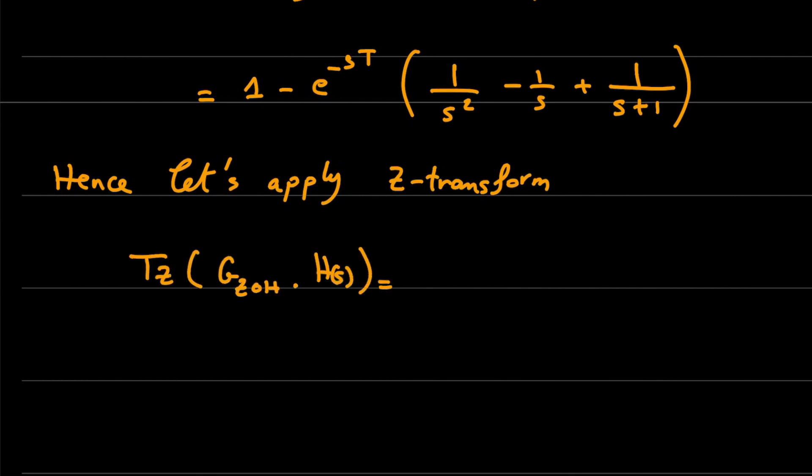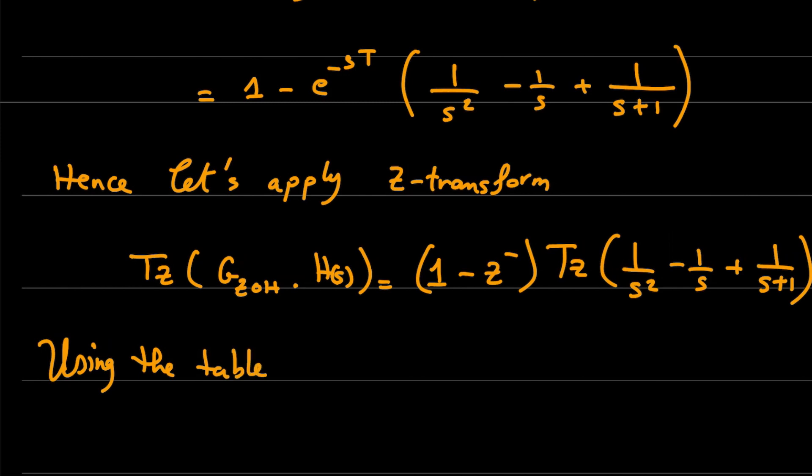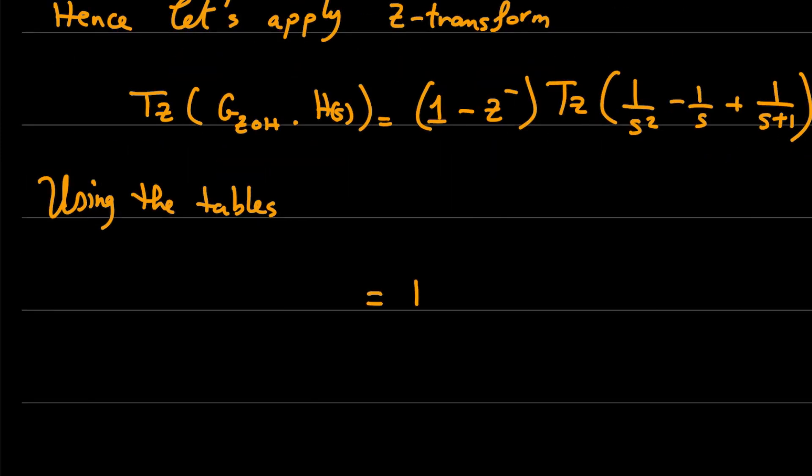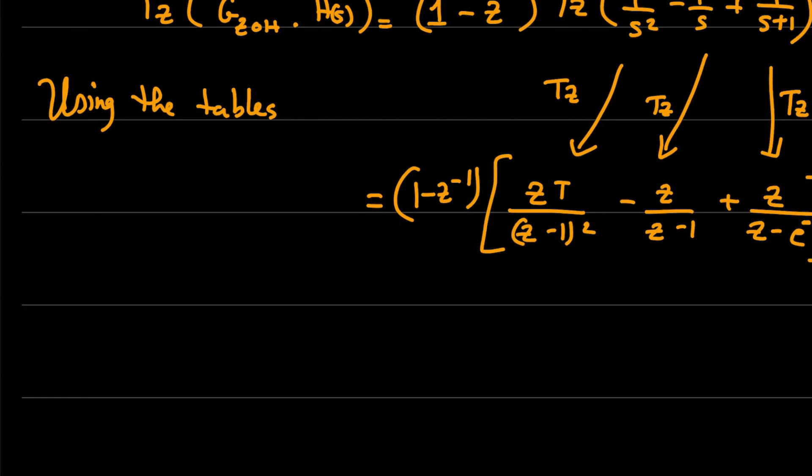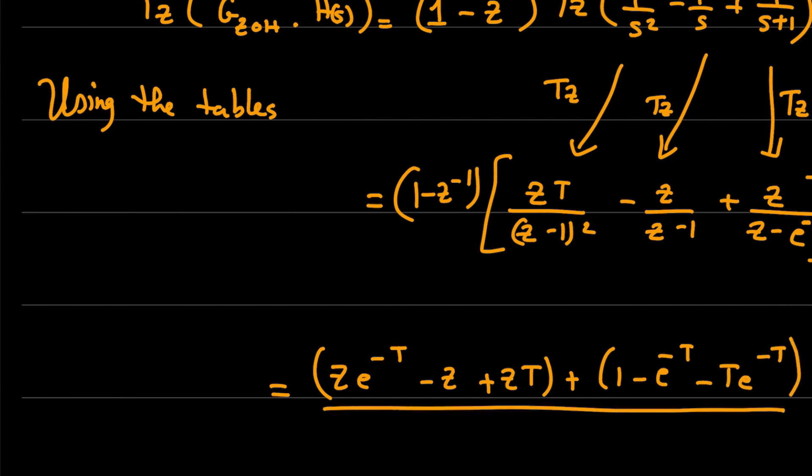So it is given by this expression. We can use the tables to find the z-transform of all these elements, so we have the z-transform of 1 over s squared, 1 over s, and 1 over s plus 1. As a result, you will get this transfer function in function of the sampling period and the z variable.